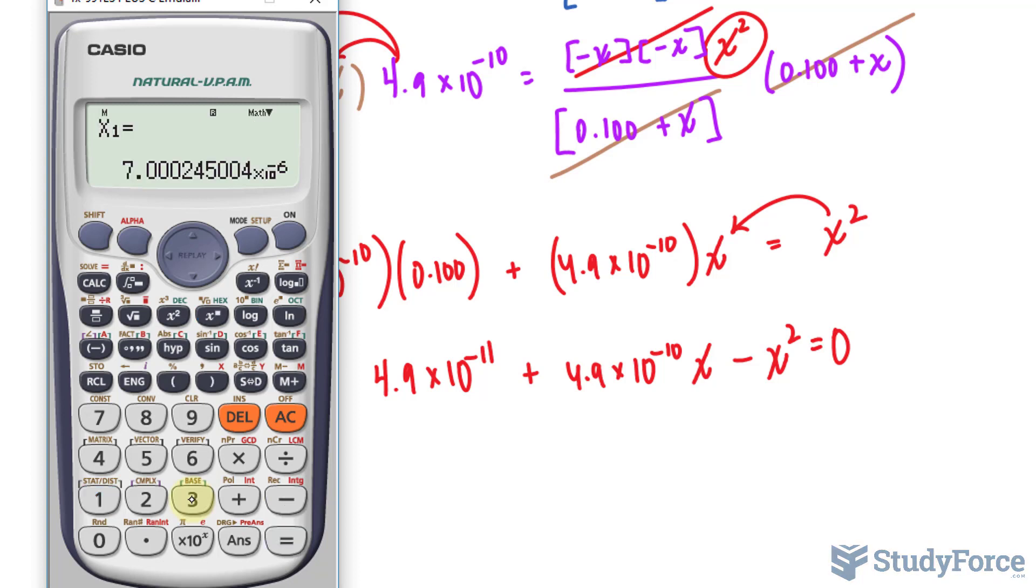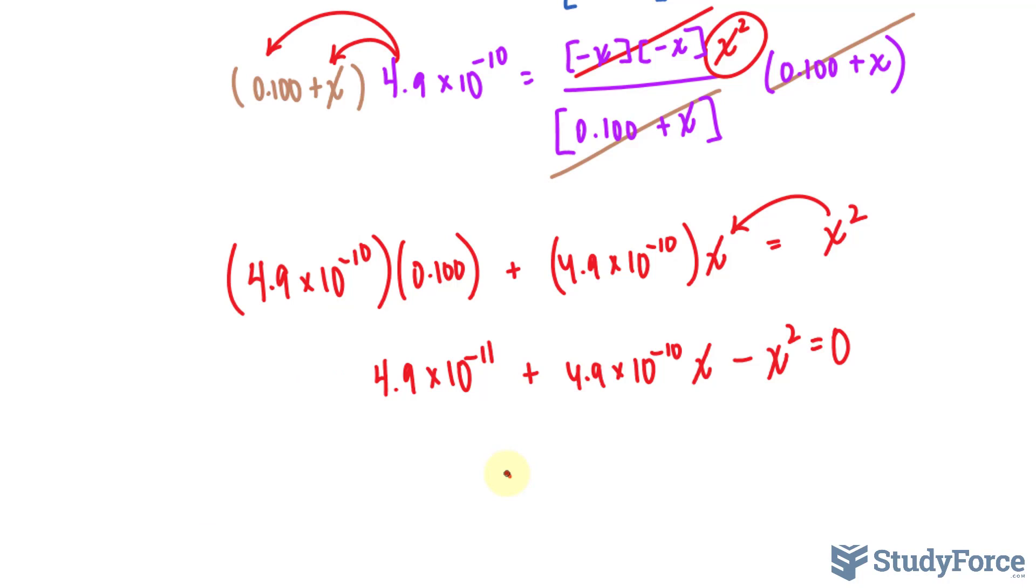Our calculator gives us two answers, a negative version and a positive version. The positive version is 7.00 times 10 raised to the power of negative 6. And the other version is 6.99 times 10 raised to the power of also negative 6.